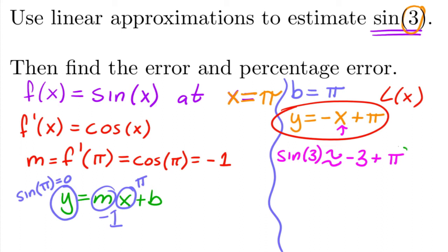Well, this one we don't even need a calculator for. Pi, let's just say it's 3.1416—let's just round it to four decimal places. And so this would simply equal negative 3 plus that, which is just 0.1416. So that's our approximation.